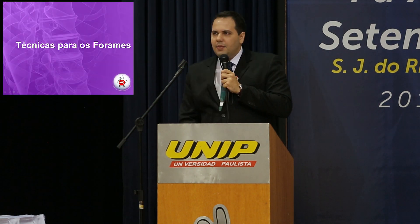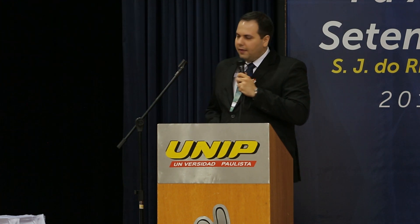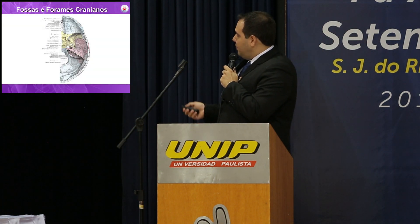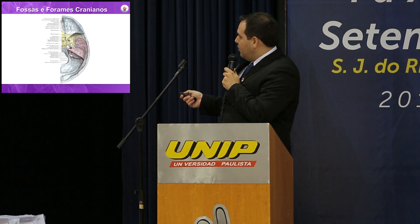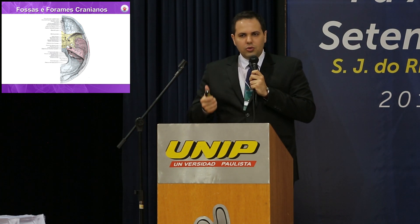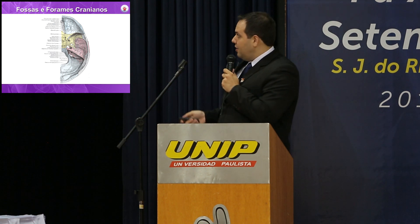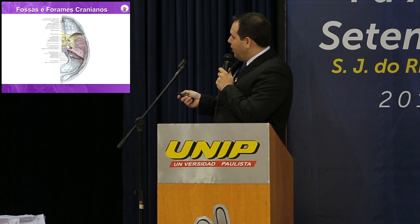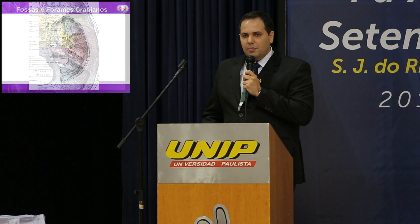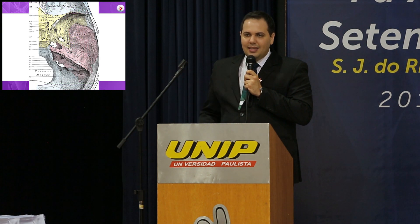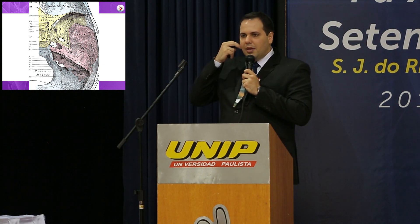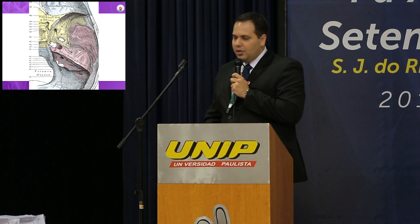Aqui estão algumas técnicas que a gente faz na clínica. Olha aqui os forames. Forame importante: fissura orbitária superior, por onde passam os nervos oculomotor, troclear e abducente. Forame redondo, por onde passa a fibra maxilar. Forame oval, por onde passa a fibra mandibular do trigêmeo.